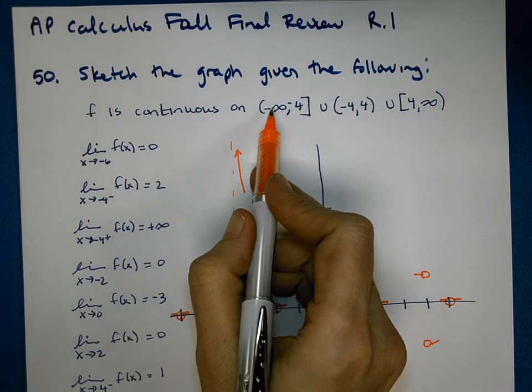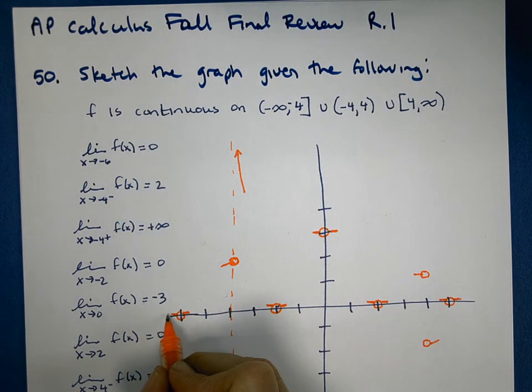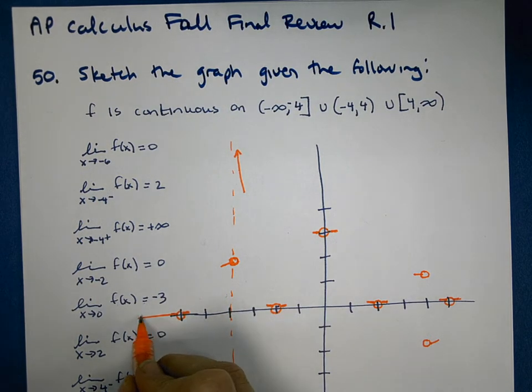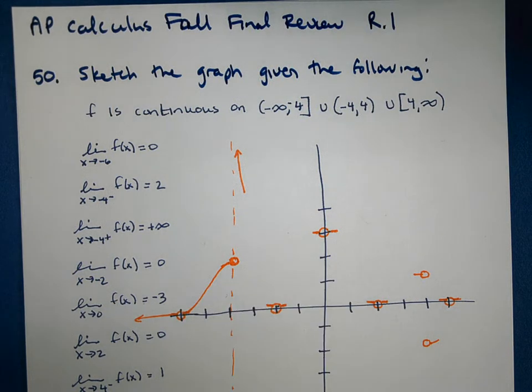But it says it's continuous from negative infinity all the way to negative 4. So I'm going to start here, and there's no rule about how I should draw this. I could come up from above, I could come down from below. Since I have almost no room, I'm just going to go straight like this. And then head up here and connect with that circle.